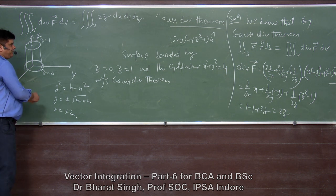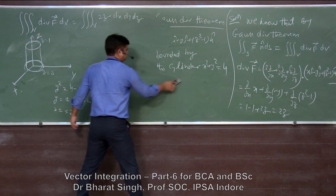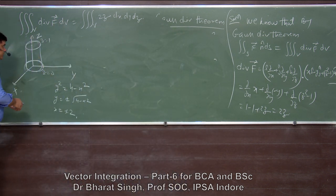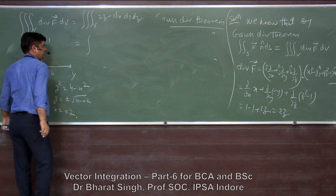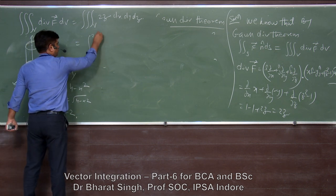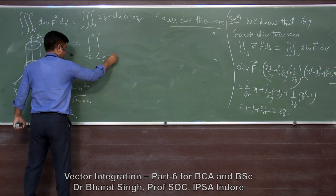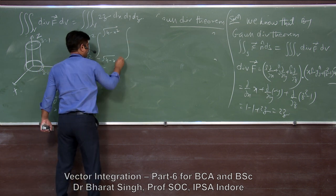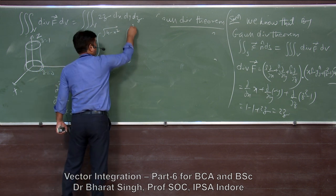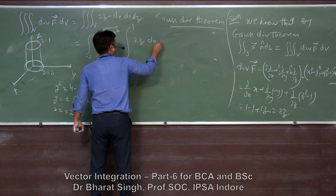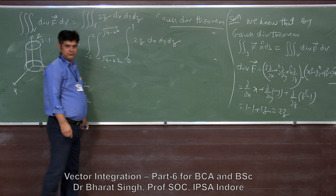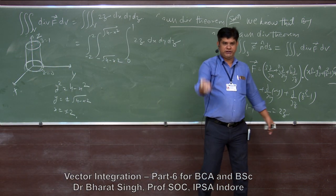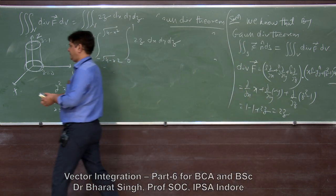For the volume integral, we take the full solid. Integrating with respect to z first: the integral of 2z from 0 to 1 gives [z²] from 0 to 1, which equals 1. So the remaining double integral is: x from −2 to 2, y from −√(4−x²) to √(4−x²), dx dy.